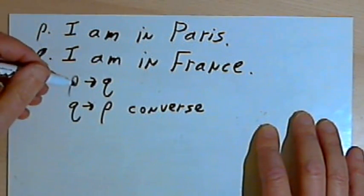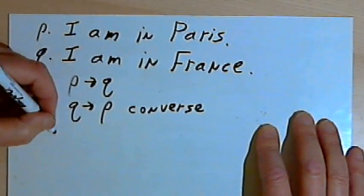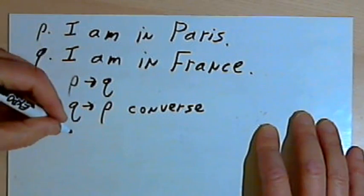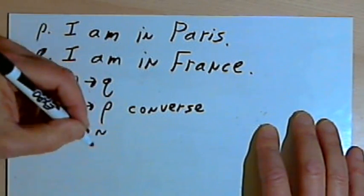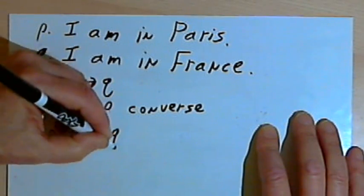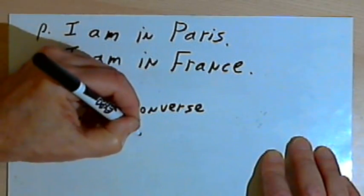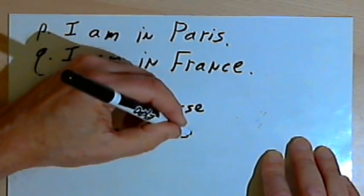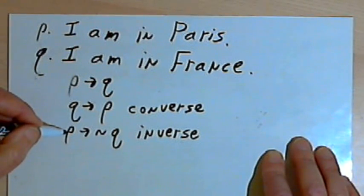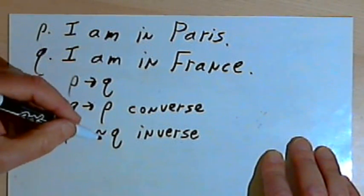Another way I could rearrange that original conditional statement would be to negate both sides. I could say, if I'm not in Paris, then I'm not in France. If not P, then not Q. This is called an inverse, and it's also not necessarily true. If I'm not in Paris, it doesn't mean I'm not in France at all. There's other places I could be.